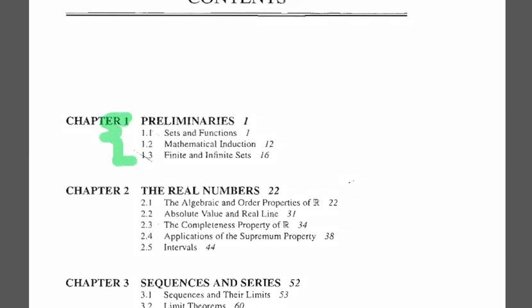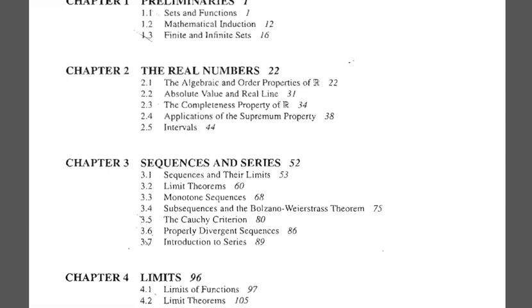After that, the next chapter in this book is the real numbers, which is also very important. Each and every chapter is self-important and has its own weight. In real numbers, the chapter starts with algebraic and order properties of a real number, then the absolute value and real line, and most importantly, it covers the completeness property of real numbers.